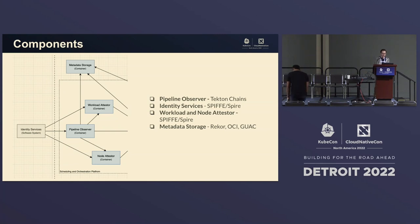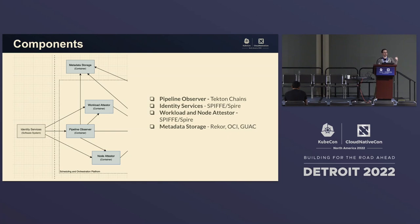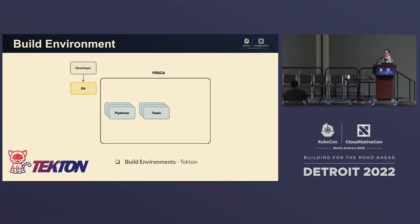All of this metadata is published into metadata storage. We also tie it together with runtime authorization. Right now we're testing that with Tetragon, which allows us to look at what's happening inside the build environment using eBPF. If the workload attesters can detect tampering with Kubernetes or pods, Tetragon handles what happens if the container itself is trying to do something malicious. For example, if a build should not have network access and is trying to have network access, we want to know that.